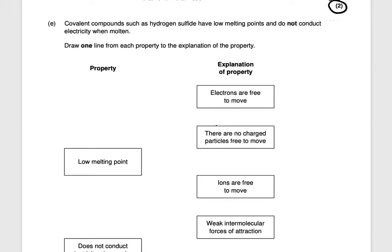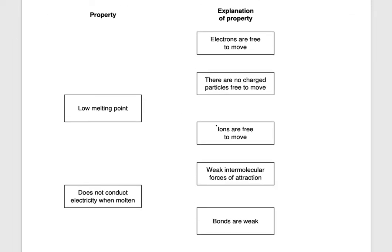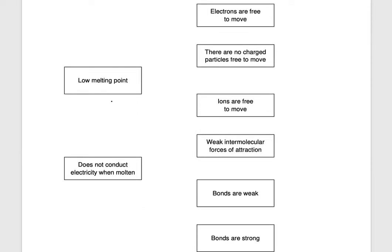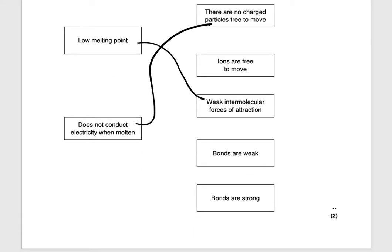Covalent compounds such as hydrogen sulfide have low melting points and do not conduct electricity when molten. If it does not conduct electricity, there are no charged particles which are free to move. That would get you two marks.